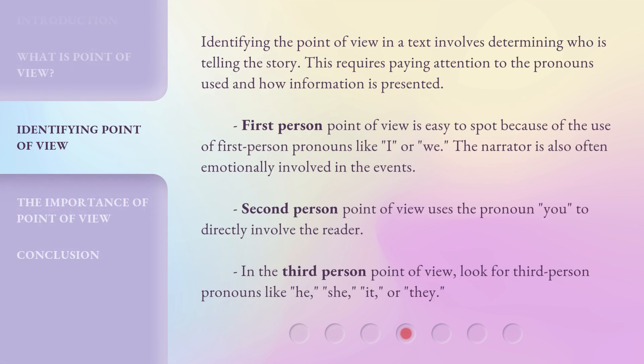Identifying the point of view in a text involves determining who is telling the story. This requires paying attention to the pronouns used and how information is presented. First person point of view is easy to spot because of the use of first person pronouns like 'I' or 'we.' The narrator is also often emotionally involved in the events. Second person point of view uses the pronoun 'you' to directly involve the reader. In the third person point of view, look for third person pronouns like 'he,' 'she,' 'it,' or 'they.'